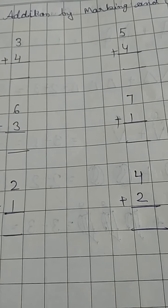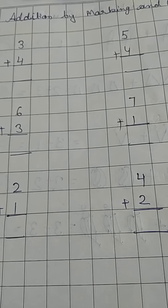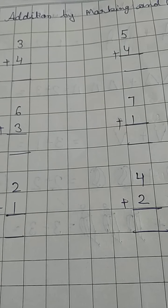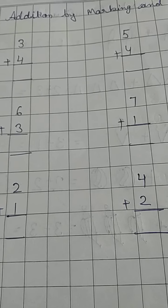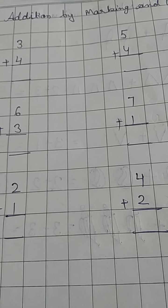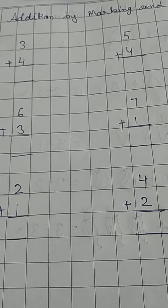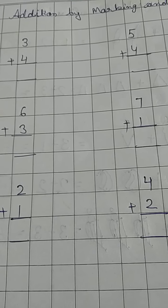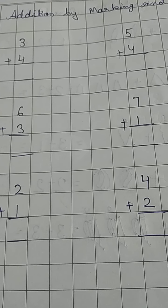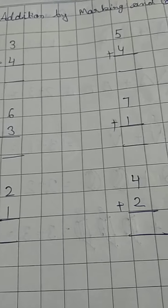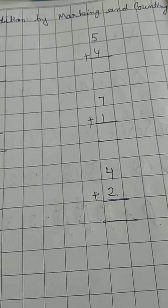So let's start. First of all, we write the date, and now here we will write the heading: Addition by marking and counting.